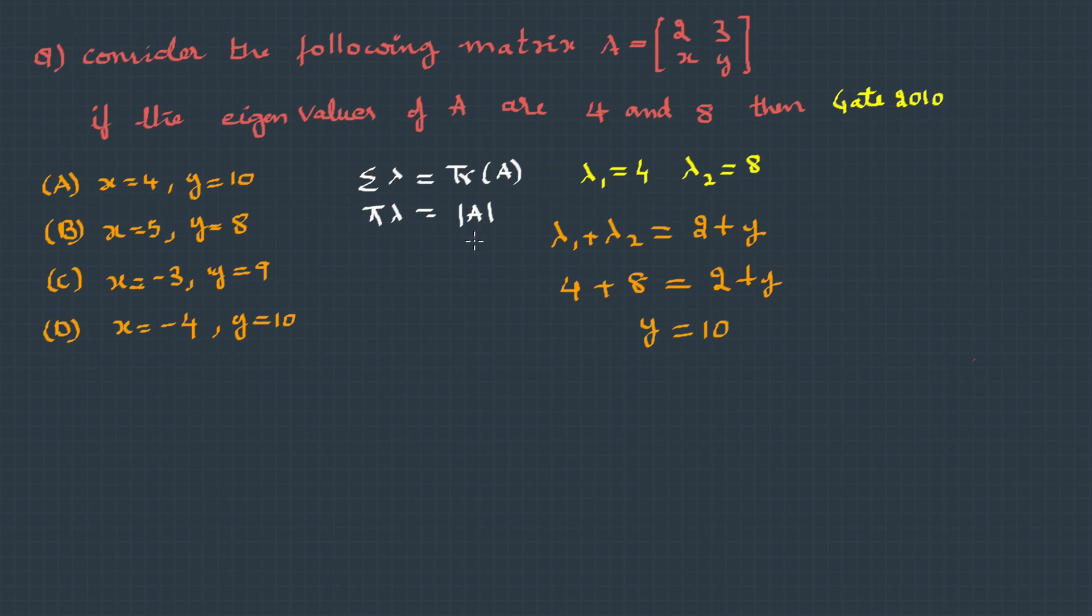Now, using the second property, the product of roots is determinant of the matrix. That is, lambda 1 into lambda 2 will be equal to det of A. So, 4 into 8 is equal to 2y minus 3x. We already know y is 10. So, when we substitute this, we get 32 equals 20 minus 3x. And when we solve for x, x becomes minus 4. Therefore, option D is correct.